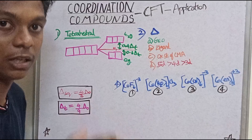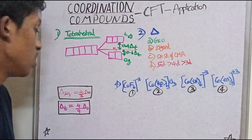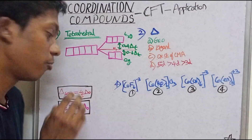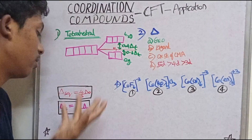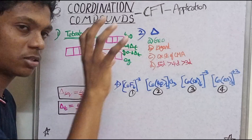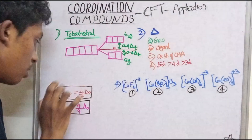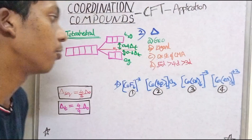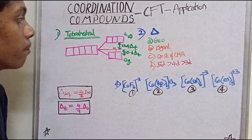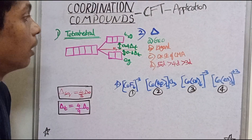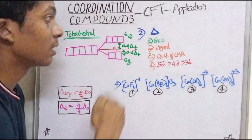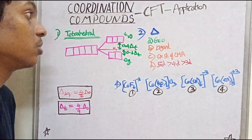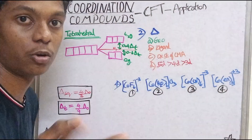So tetrahedral has fewer splitting energy than octahedral. Comparing all three geometries relative to octahedral — using the ratios 4/3 and 4/9 — the order of splitting energy is: square planar > octahedral > tetrahedral. This is the second part: splitting energy. This splitting energy depends on certain factors.